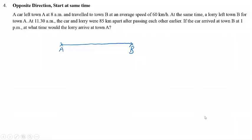In Scenario 4, we have two objects traveling in the opposite direction and they start at the same time. That means we have one object traveling from left to right and another one traveling from right to left. So we know that if they travel in the opposite direction, they will meet somewhere in between.